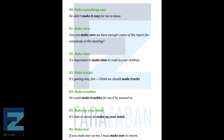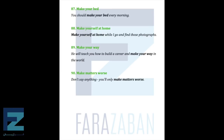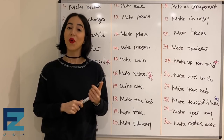Make someone angry, mad, happy or sad — You should not make your mother angry. Make something easy — Make it easy for me to leave. Make sure — Can you make sure we have enough copies of the report for everybody at the meeting? Make time — It's important to make time to read to your children. Make tracks — It's getting late Jim, I think we should make tracks. Make troubles — He could make troubles for me if he wanted to. Make up your mind — It's now or never, so make up your mind. Make war — If you make war on me, I must make war in return. Make your bed — You should make your bed every morning. Make yourself at home — Make yourself at home while I go and find those photographs. Make your way — He'll teach you how to build a career and make your way in the world. Make matters worse — Don't say anything, you'll only make matters worse.